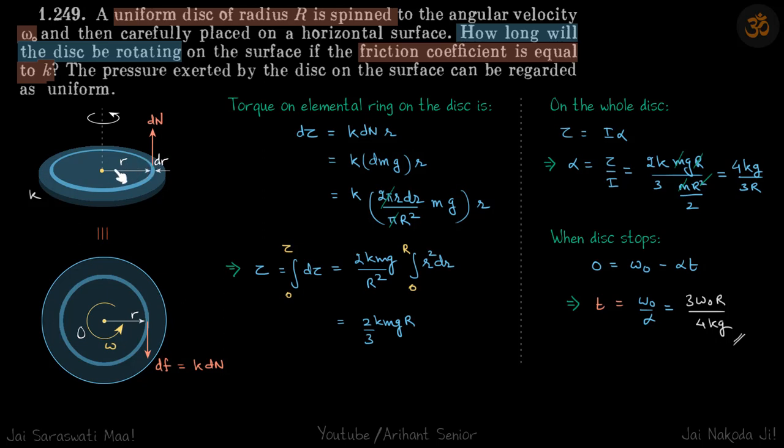So we have to take an element on which the torque is the same because the distance of that element from the center is the same. We will get a small amount d tau and then integrate to find the total torque. Once we find the total torque, we will find alpha, and if we know how fast it is decelerating, we can find how long the disc will rotate.